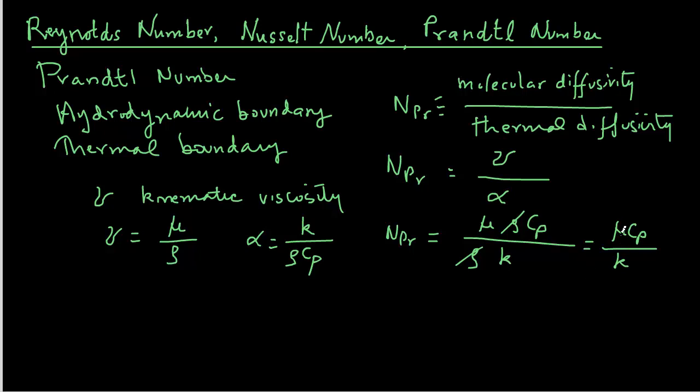If we substitute the units for each of these quantities, for mu the units are kilograms per meter second, for cp the units are joules per kilogram degree C, and for thermal conductivity the units are joules per second meter degree C. We see that the kilograms cancel out, seconds cancel out, joules cancel out, and meters cancel out, so everything cancels out and we are left with a dimensionless number.